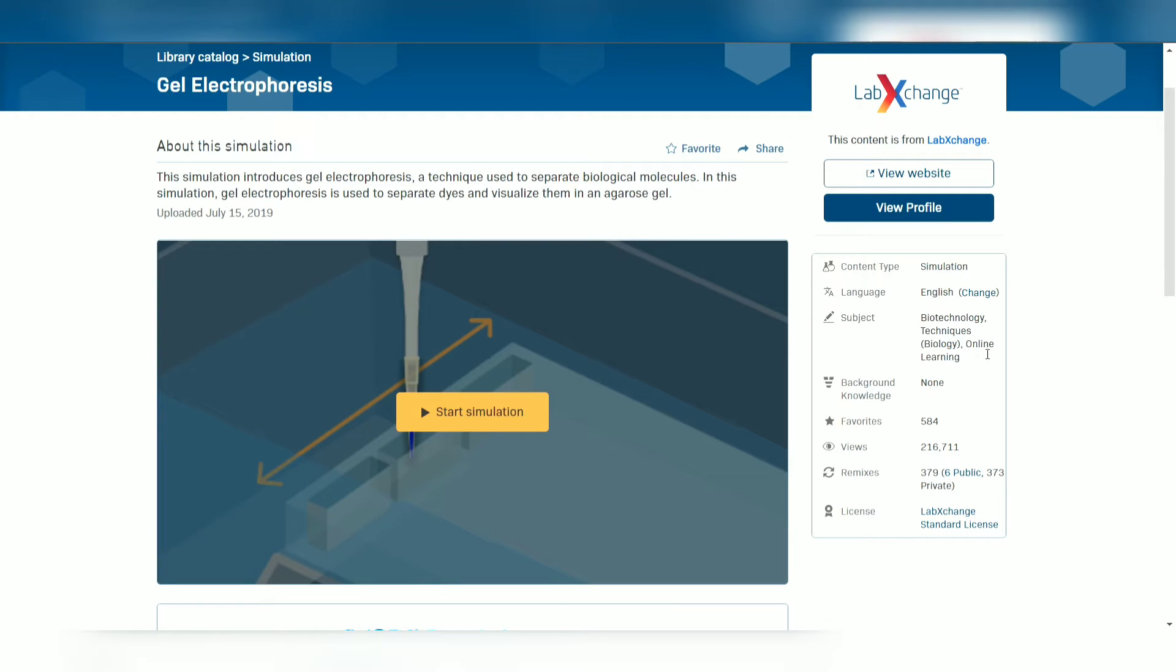Today I'm going to show you guys gel electrophoresis. Gel electrophoresis is a laboratory method used to separate mixtures of DNA, RNA or proteins according to molecular size. In gel electrophoresis, the molecules to be separated are pushed by an electrical field through a gel that contains small pores. Now, let's enjoy my demonstration.